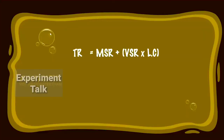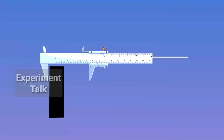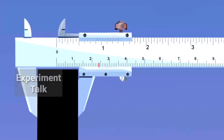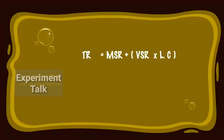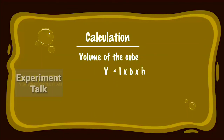Calculation: TR is equal to MSR plus VSR into least count, that is equal to 3.8 plus 5 into 0.01, which is equal to 3.85 cm. Then place the rectangular block height-wise in between the outer measuring jaws of the Vernier Calipers and note the MSR and VSR reading. Calculation: TR is equal to MSR plus VSR into least count, that is equal to 2.4 plus 9 into 0.01, which is equal to 2.49 cm. So, V is equal to 7.24 × 3.85 × 2.49, which is equal to 69.40626 cm³.